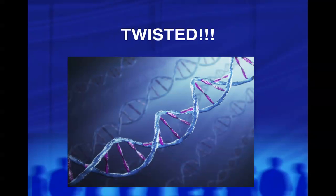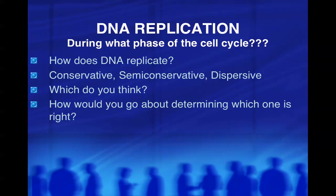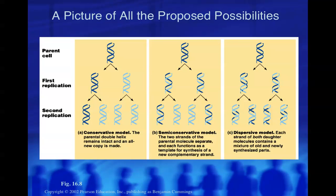The DNA is twisted, as seen in the picture — not a straight ladder, but a curved, twisted ladder. Once scientists figured out the structure, they had to figure out how it replicated, since every cell has DNA. They came up with three ideas: semi-conservative, conservative, and dispersive. To determine which was correct, various experiments were proposed, and what was actually done was an experiment by Meselson and Stahl.